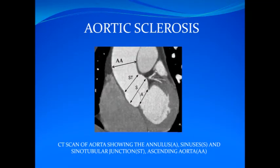Once the gradient across the aortic valve reaches 25 mmHg, most clinicians would label this lesion as aortic stenosis. All patients with aortic stenosis should have an imaging study to confirm the presence of two or three leaflets, as well as the size of the aortic sinuses, the sinotubular junction, and the ascending aorta.